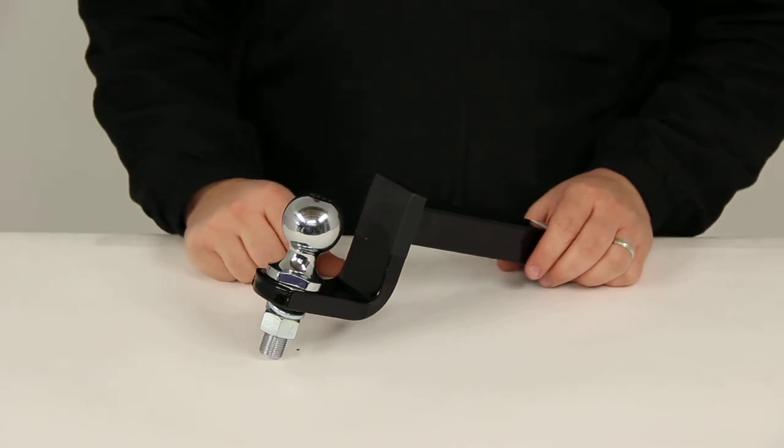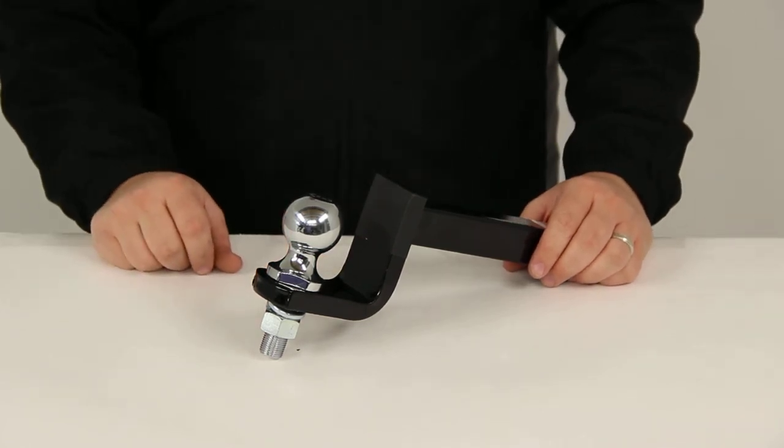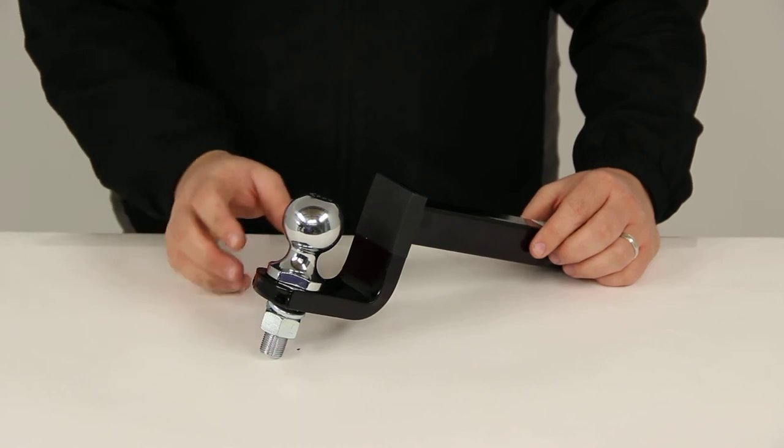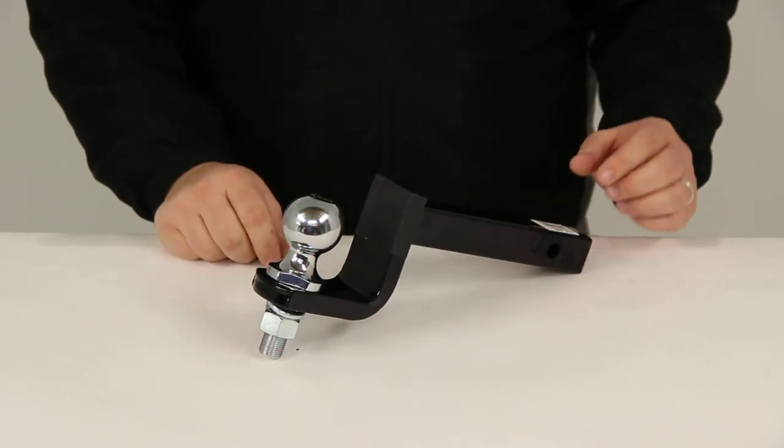And that's going to complete today's review of part number 19257. This is the hitch ball with a 1 and 7/8 inch ball diameter from TowReady.